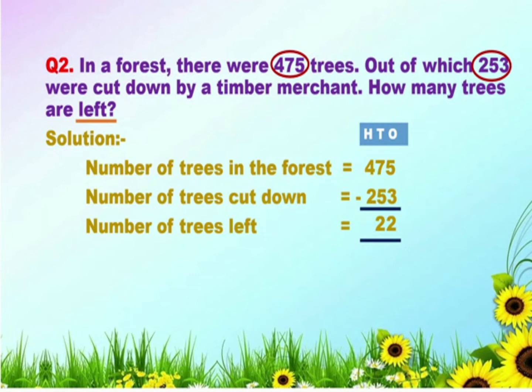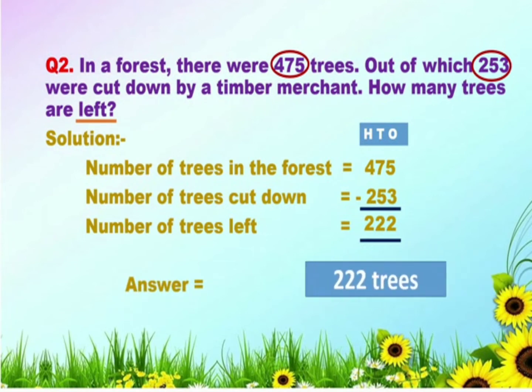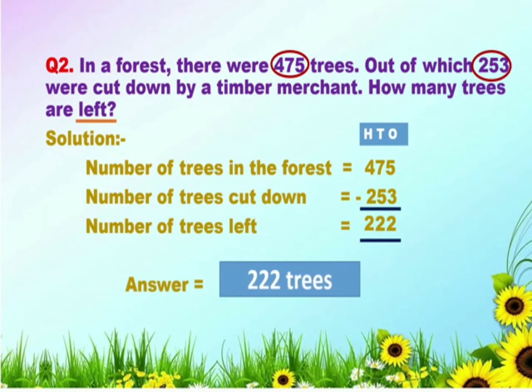After that, subtract the digits at hundreds place: 4 minus 2 is equal to 2. So we get the answer 222. The answer is 222 trees.